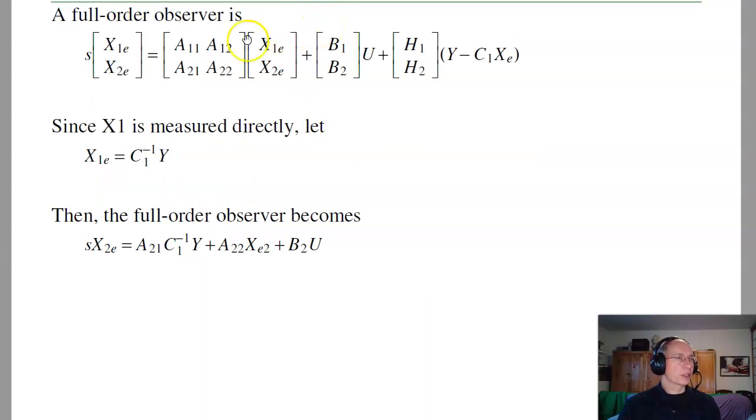The full order observer is as follows. I'm going to estimate states x1 and x2. That'll be in the same form as the plant. Plus I'll have this feedback gain h, times the difference between the measured output and the estimated output. Now, since c1 is invertible by assumption, I can tell you what x1e is directly. So I'll just substitute that right in. Then the full order observer is just the second set of equations.